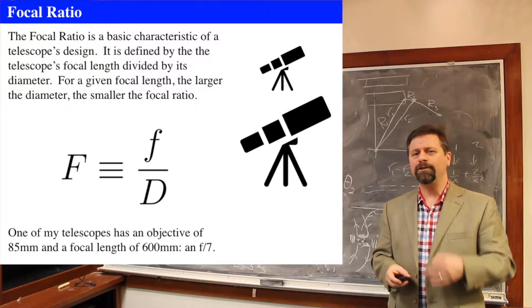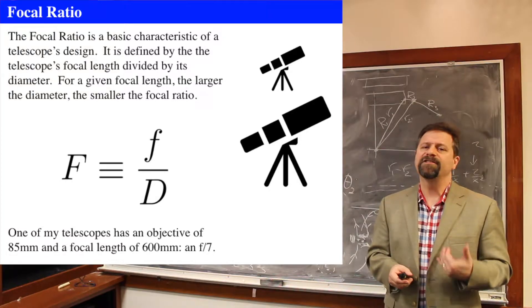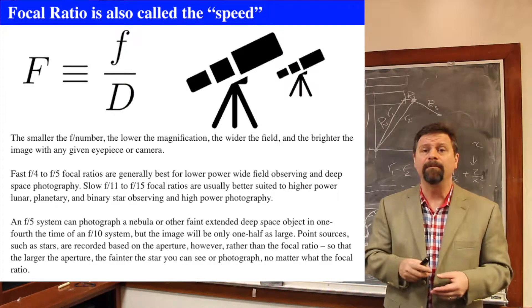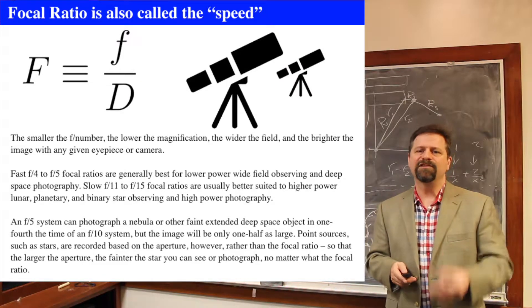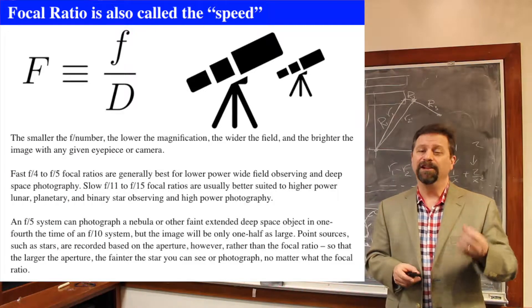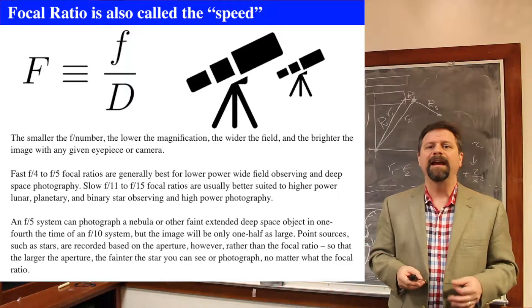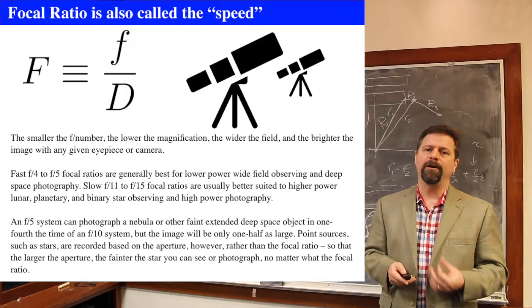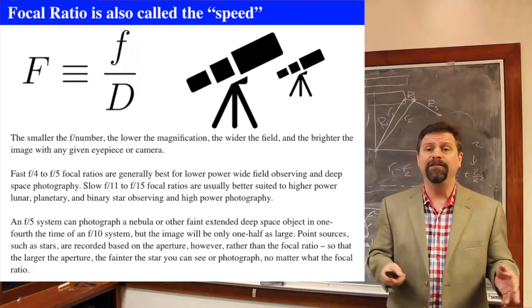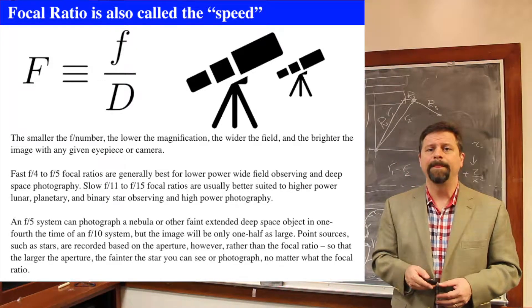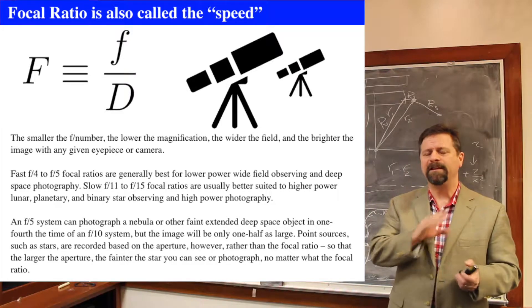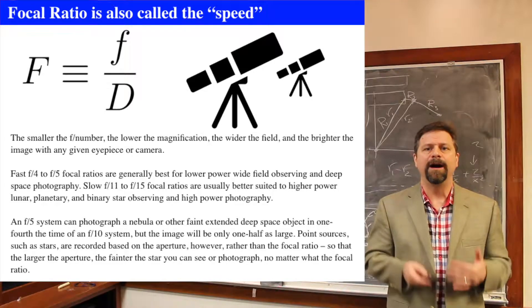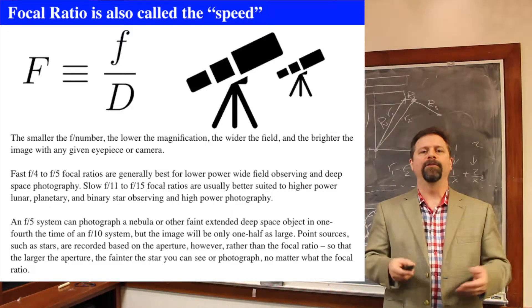The focal ratio can also be called the speed of the telescope. When you see F/ on a telescope, that's the focal ratio or F-number. The smaller the focal ratio number, the lower the magnification, the wider the field of view, and the brighter the image with any given eyepiece or camera. Short focal ratios are good for wide fields of view and deep-space astrophotography. A slow focal ratio — meaning a very long focal length — is usually better suited to high-power lunar, planetary, and binary star observing.